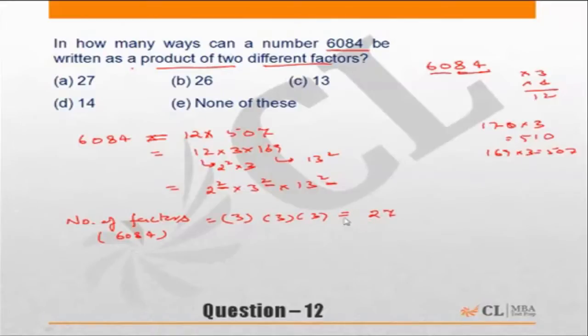Now it should be obvious, it should be visible to all of us that this is a perfect square. All powers are even and also the number of factors is odd, that is another indicator it's a perfect square.